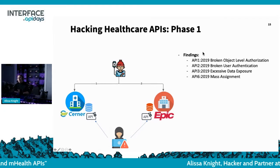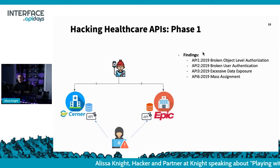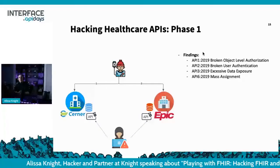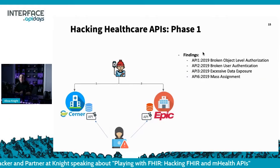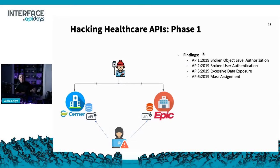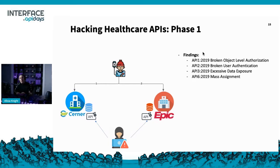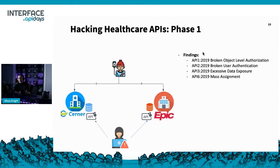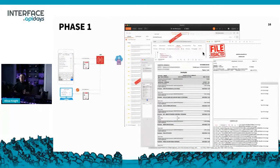For those not familiar with the OWASP API Security Top 10 — developers, please familiarize yourself with these vulnerabilities. The four most common vulnerabilities in my testing were: BOLA (Broken Object Level Authorization), also known as IDOR (Insecure Direct Object Reference) vulnerabilities; broken user authentication, where I didn't even need to authenticate to access thousands of patient records; excessive data exposure vulnerabilities; and mass assignment vulnerabilities.